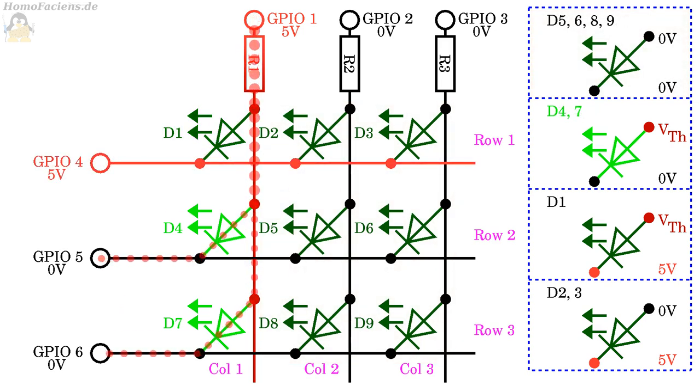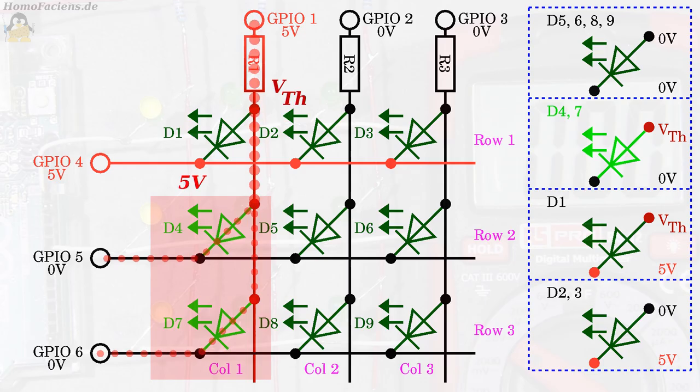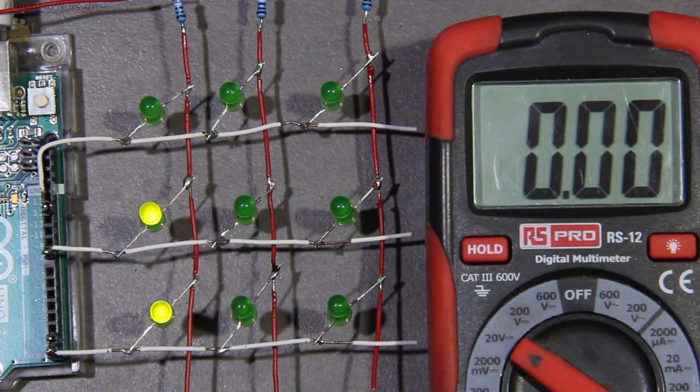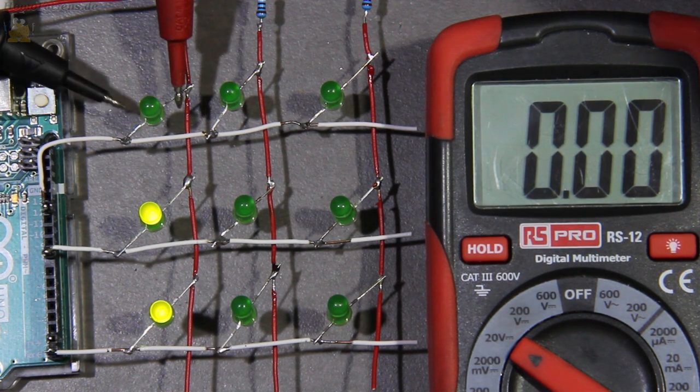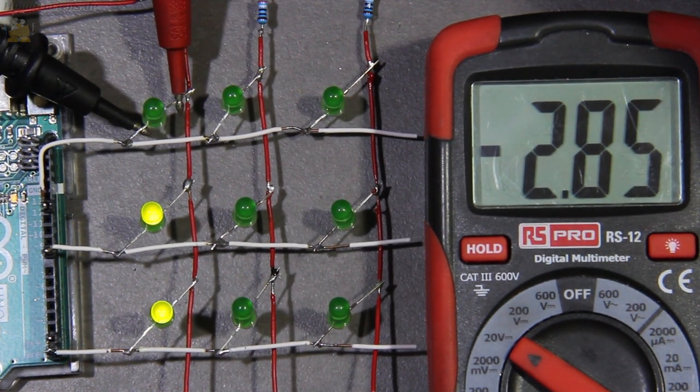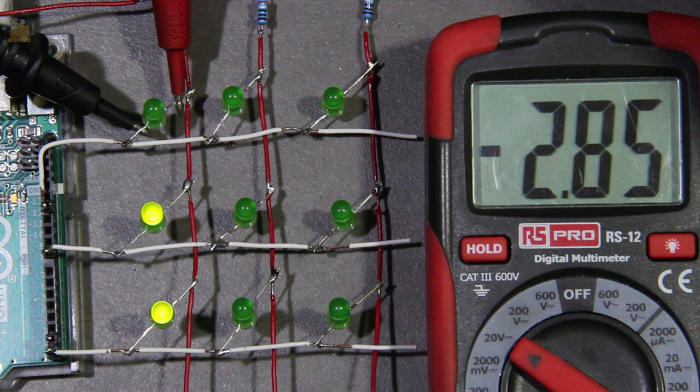If GPIO number 4 is also set to high, LED number 1 is turned off. The full high signal of 5V is now applied to the cathode of LED number 1. Since diodes 4 and 7 are still switched in forward direction, the potential at the anode of LED 1 equals the threshold voltage. A voltage drop of approximately minus 2.85V between anode and cathode can be measured at LED 1, which corresponds to the logic voltage of approximately 5V minus the threshold voltage. This LED is thus switched in reverse direction.